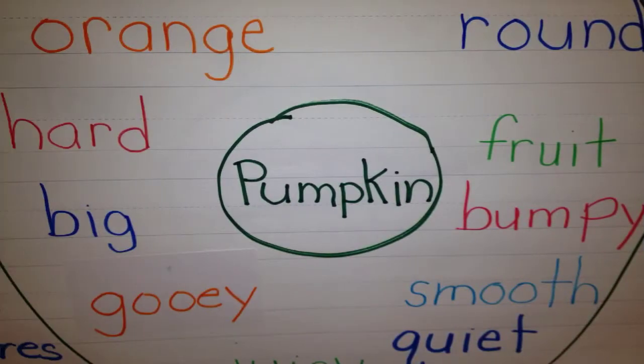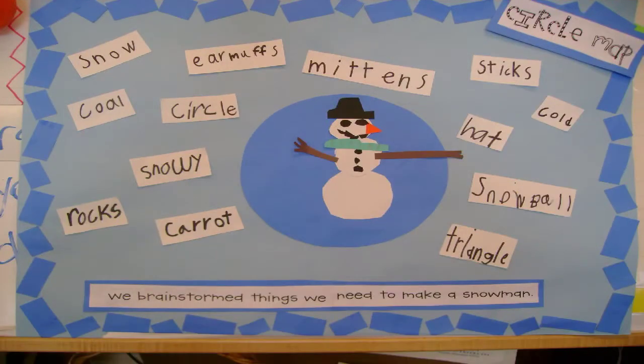Here are some circle map examples. This circle map has a topic of pumpkin — I know that because it's in the small circle in the middle. This circle map tells us that a pumpkin is orange, gooey, and it's a fruit. This circle map is about a snowman. Look how creative — they made a snowman instead of writing it in the middle. This circle map tells us things that we need to make a snowman, like snow, a hat, and sticks.